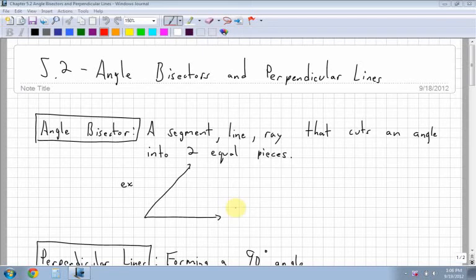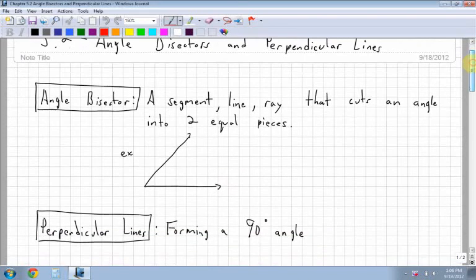Alright, the next section in this chapter, 5.2, is angle bisectors and perpendicular lines. So, we're going to look at a few definitions here.